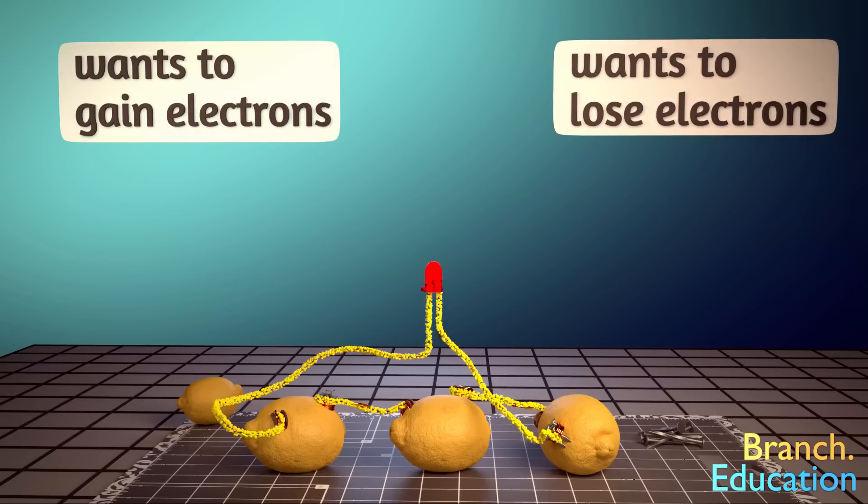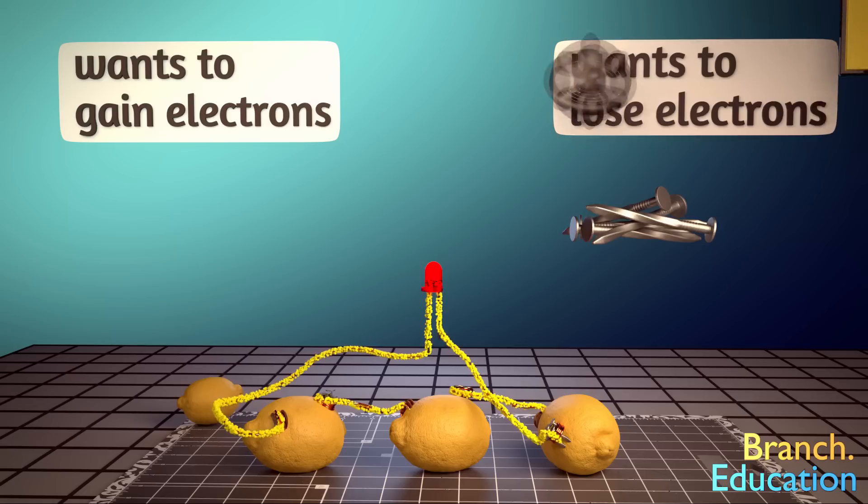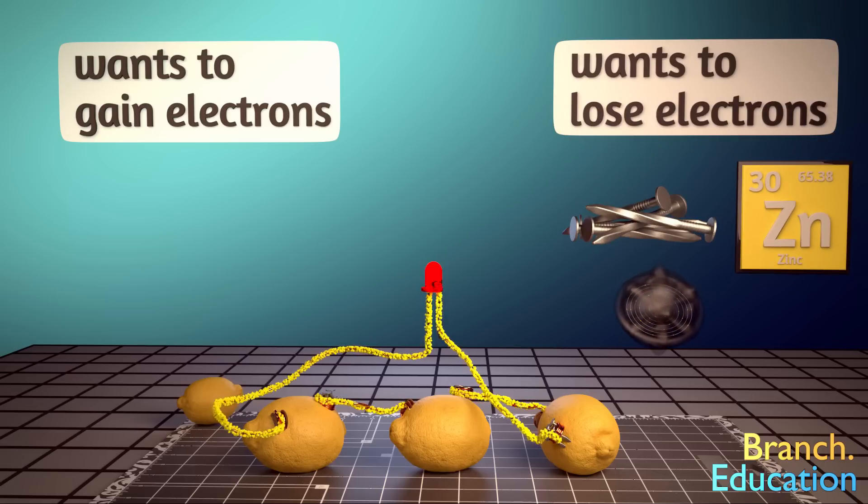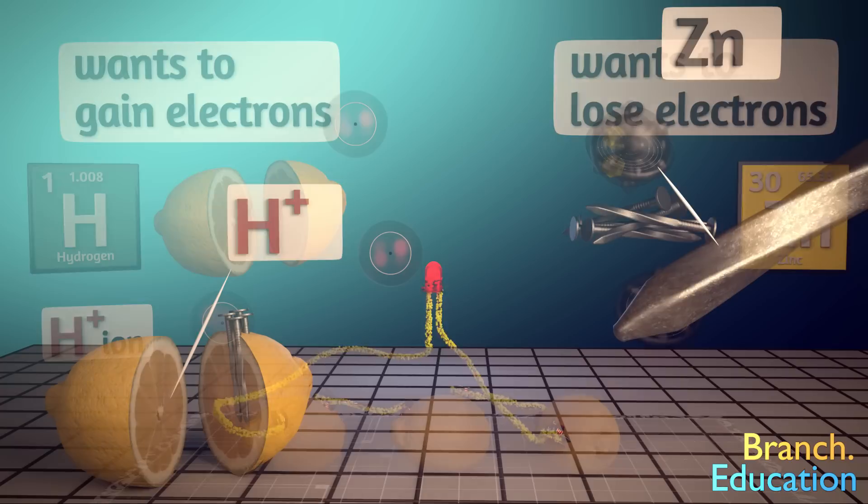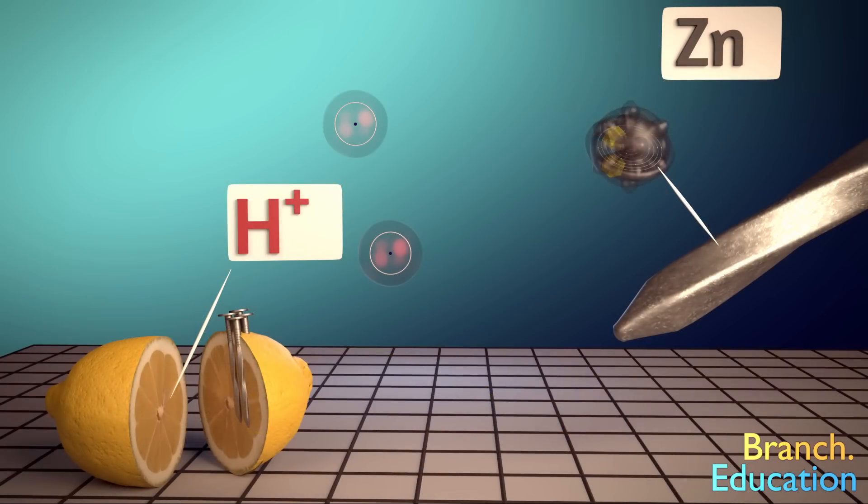In the case of our lemon battery, the nails, but more specifically the protective anti-rust coating of zinc on the nails, wants to lose electrons, and then the acidic juices in the lemon, specifically the hydrogen ions or H+, wants to gain electrons. So this chemical reaction is between the zinc and the acidic lemon juice, and when a path is made available, electrons flow out of the zinc-coated nails and to the hydrogen ions in the lemon juice.